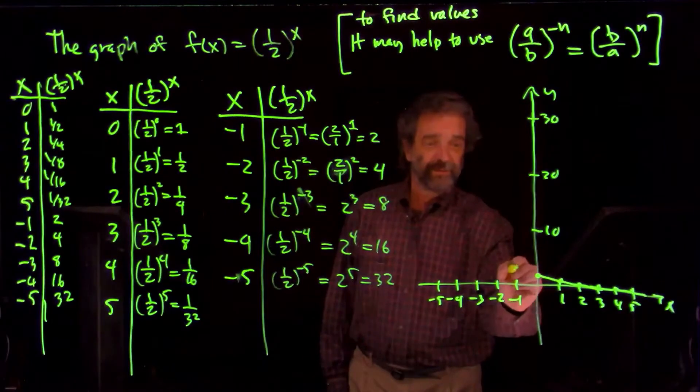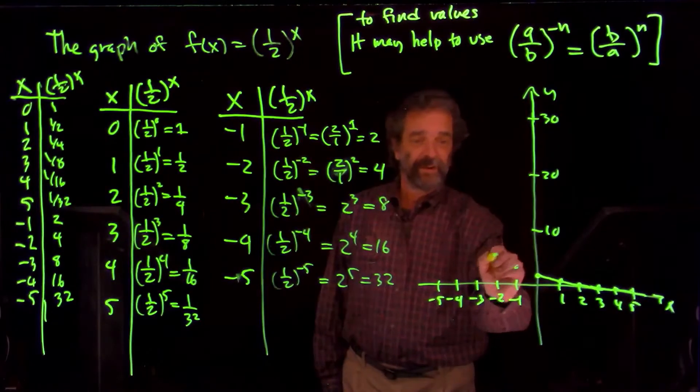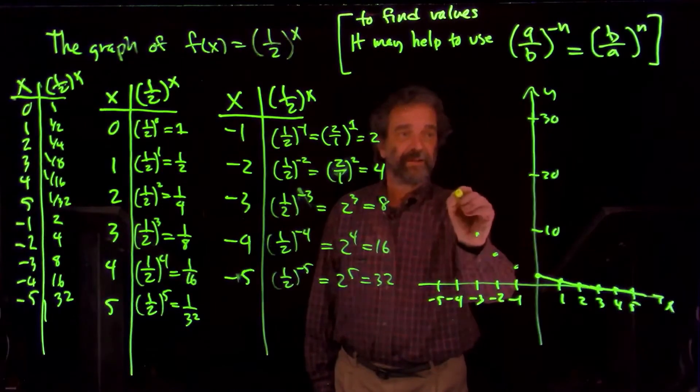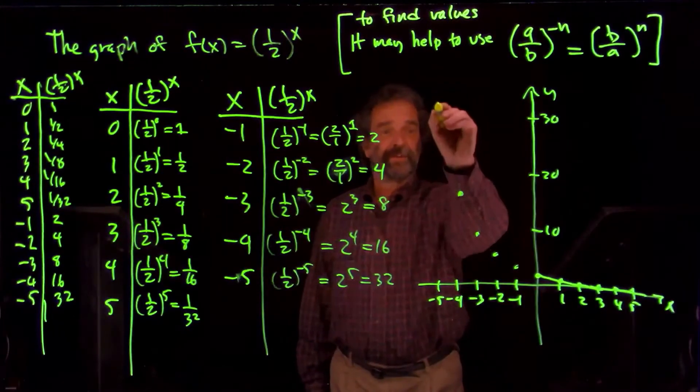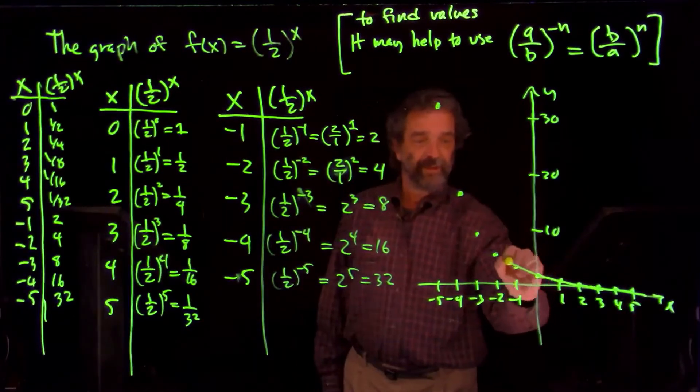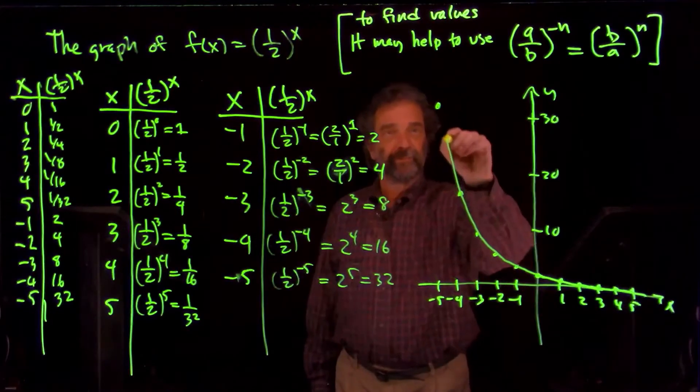And then it's the negative numbers that cause large y values to happen. Minus 1 gives us 2. Minus 2 gives us 4. Minus 3 gives us 8. Minus 4 gives us 16. And minus 5 up here, 32. So up we go.